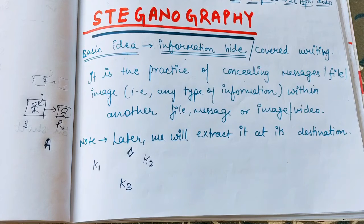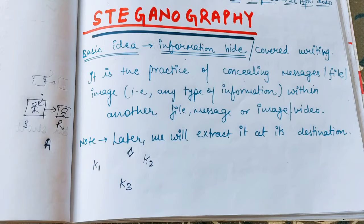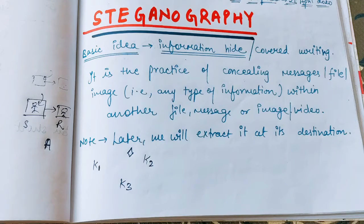Now let's start. What is Steganography? Basically, Cryptography and Steganography are both completely different things. But in Steganography as well as in Cryptography, both are methods of providing security to our information. We just want that our information should be secure when we are sending it. So that is the reason we are using Steganography and Cryptography, but both of them are different.